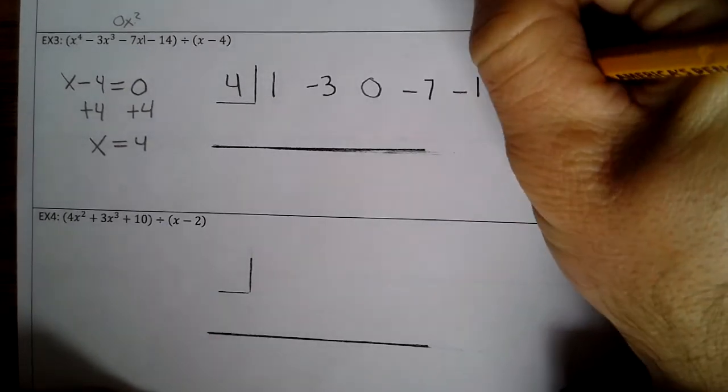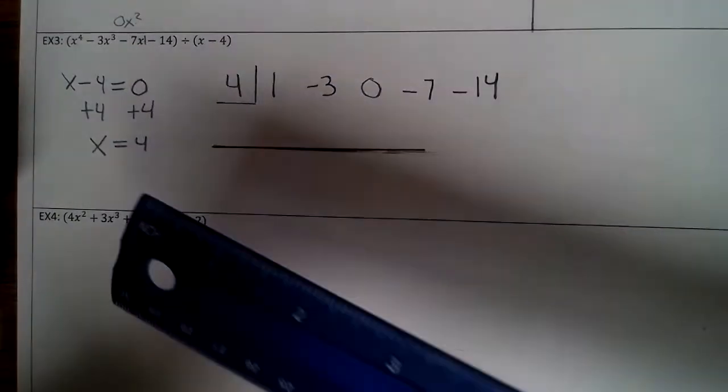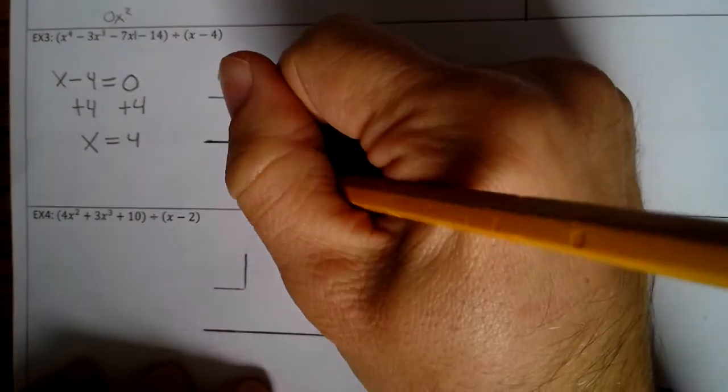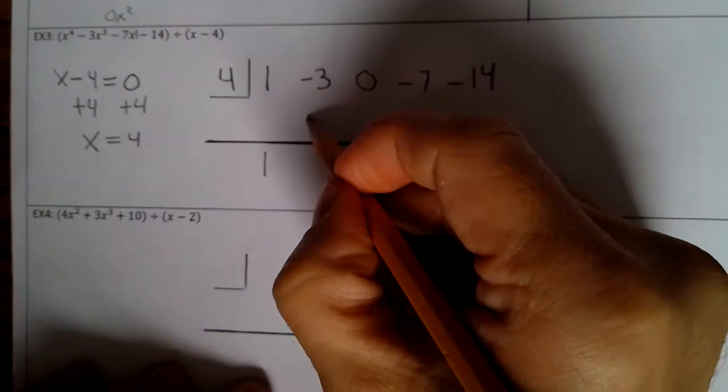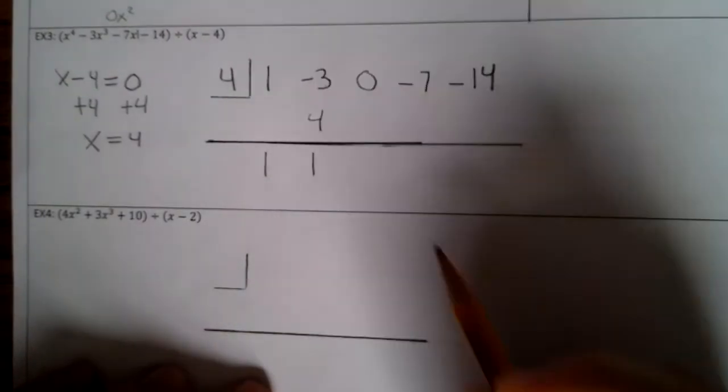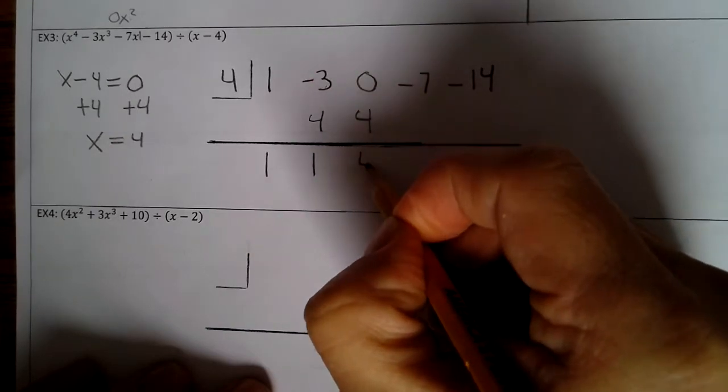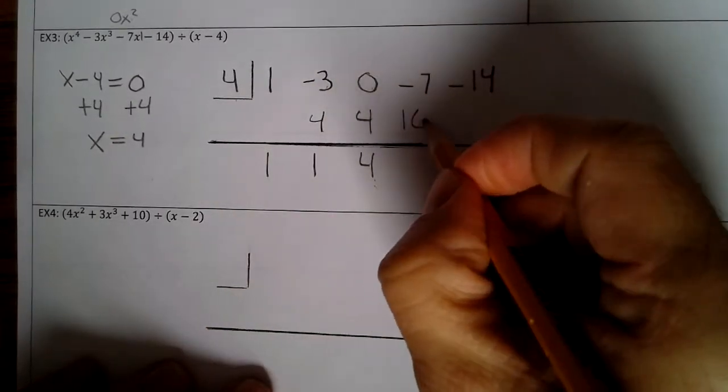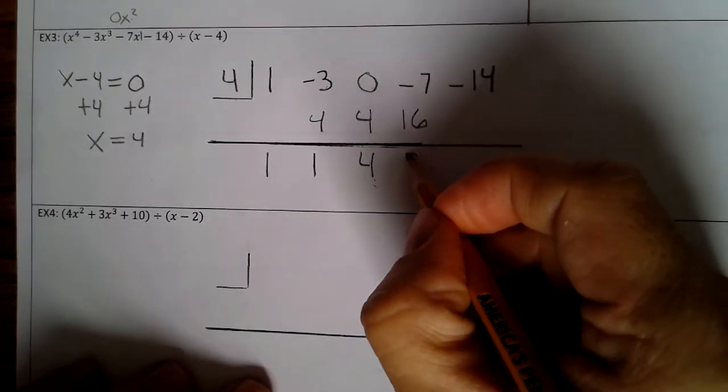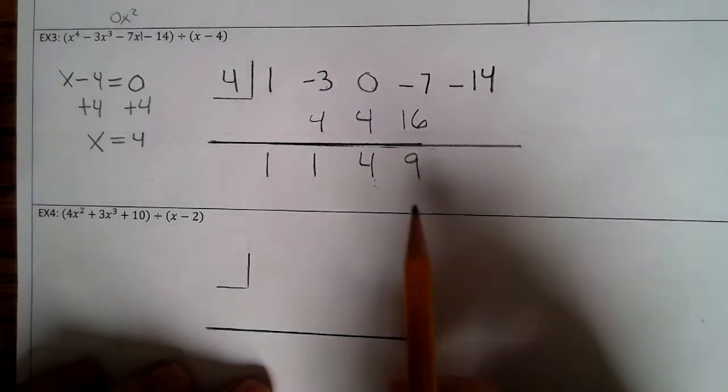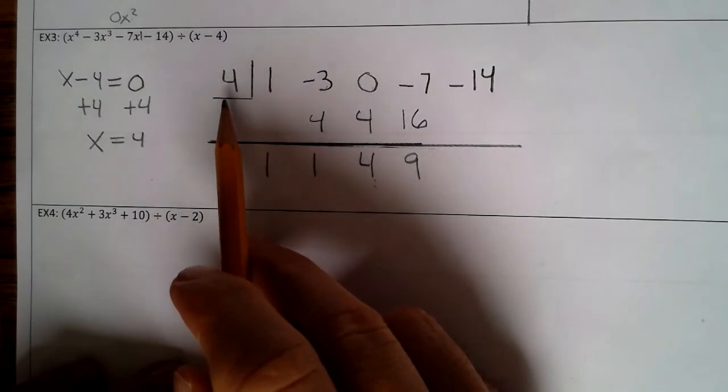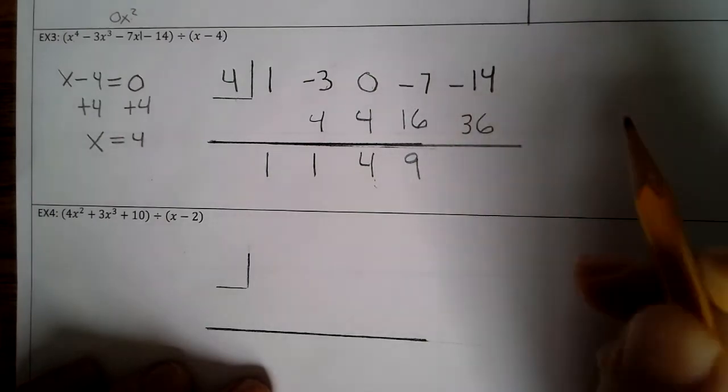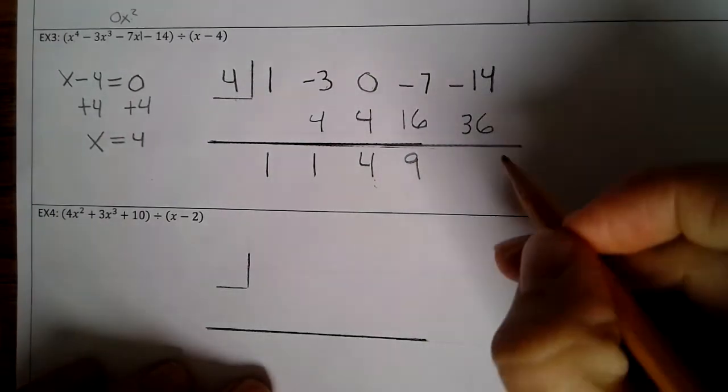Now let's extend this line. Alright. So we bring down the 1. 4 times 1 is 4. Negative 3 plus 4 is 1. 4 times 1 is 4. 0 plus 4 is 4. 4 times 4 is 16. Negative 7 plus 16 is 9. 9 times 4 is 36. Negative 14 plus 36 is 22. So your remainder is 22.